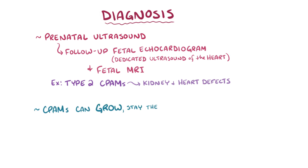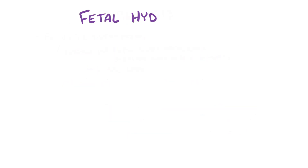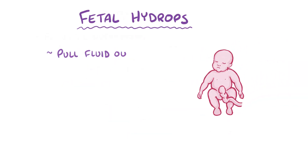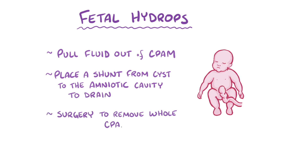CPAMs can grow, stay the same size, or even regress during pregnancy, so they need to be followed over time. If fetal hydrops develops, it might be necessary to pull fluid out of the CPAM to make it smaller, or to place a shunt from the cyst to the amniotic cavity to help it drain, or to do surgery to remove the entire CPAM.